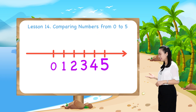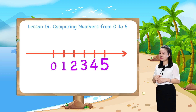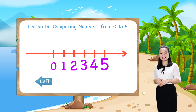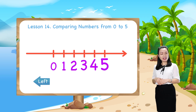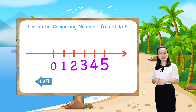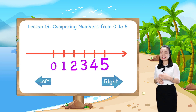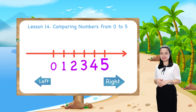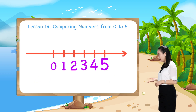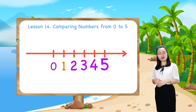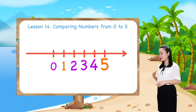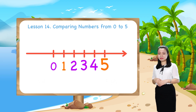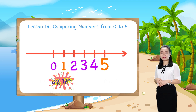And a number to the left is less than a number to the right. For example, number 1 is to the left of number 5, so 1 is less than 5.